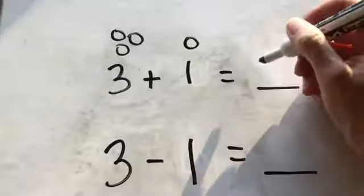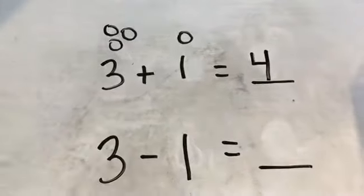So we count them all. One, two, three, four. What does three plus one equal? Four.